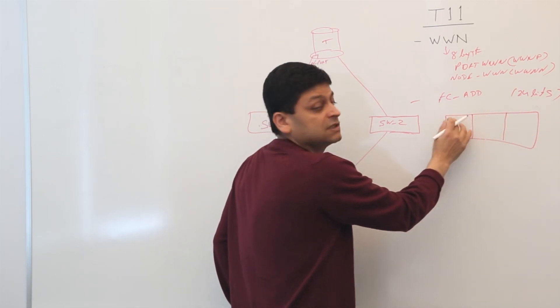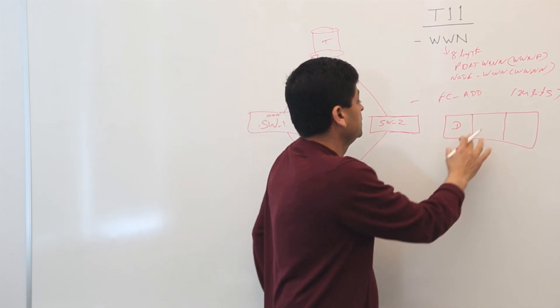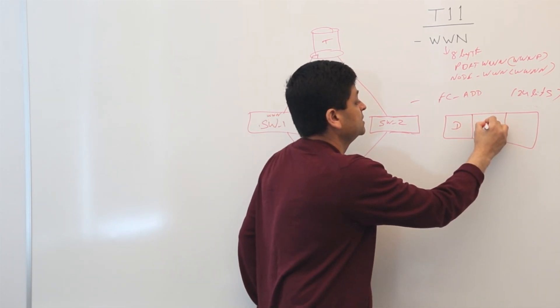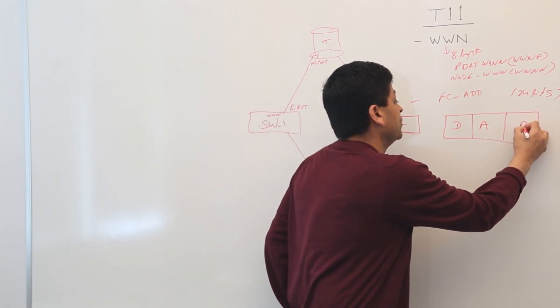So this first byte would be typically referred to as a domain. The next byte is typically referred to as an area. And the last byte will be referred to as a port.